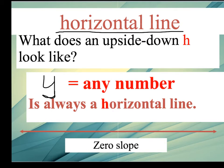If Y equals any number, any number, so it could be Y equals negative five, it is always a horizontal, and there's that H, a horizontal line.